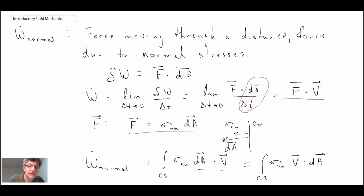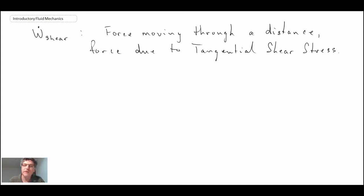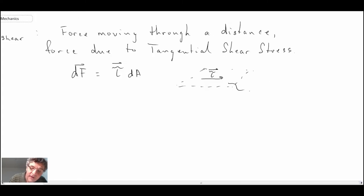The next thing that we need to look at is the shear stress work, or work associated due to shear stress. This is work associated due to tangential shear stress. Just like before for normal stress, we're going to define some force. That's going to be the differential of the shear stress vector, τ·dA. If we're going to look at a little element, some surface area, we would have τ being the shear stress, and I'll call that a vector. The area that this is being applied to is dA.